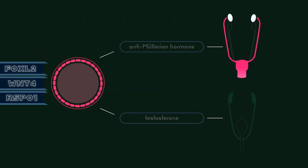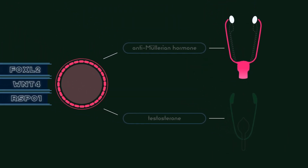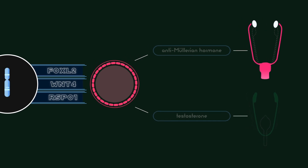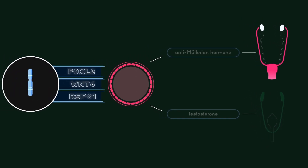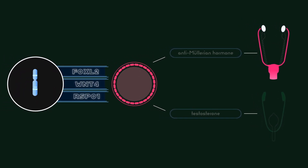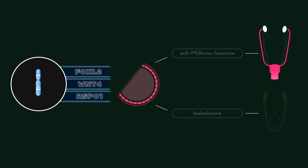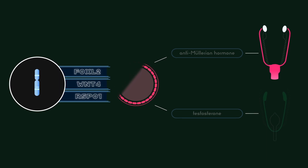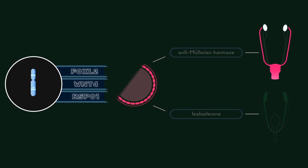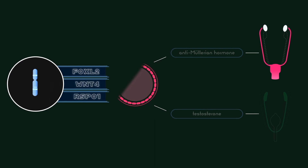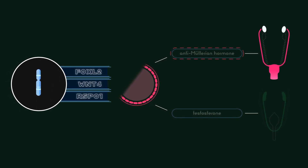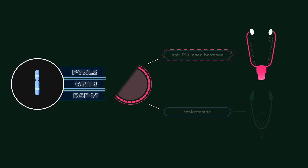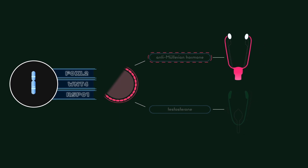The ovaries develop normally at first, but because of the missing X chromosome, the egg cells die prematurely and most ovarian tissue degenerates before birth. With no SRY activation and no anti-Müllerian hormone, the fetus develops anatomy to support the production of large gametes. Thus, newborns with Turner Syndrome are females.